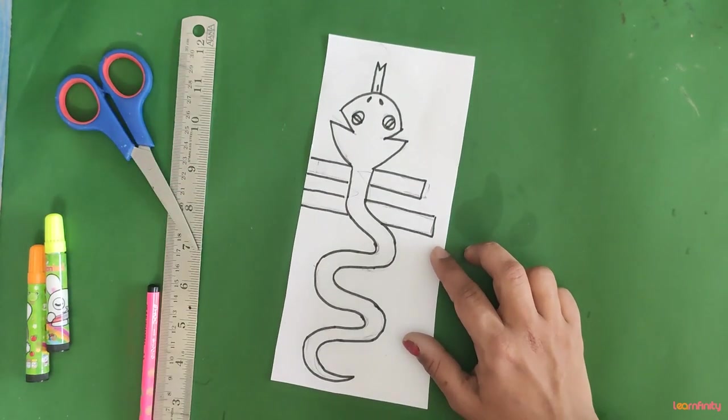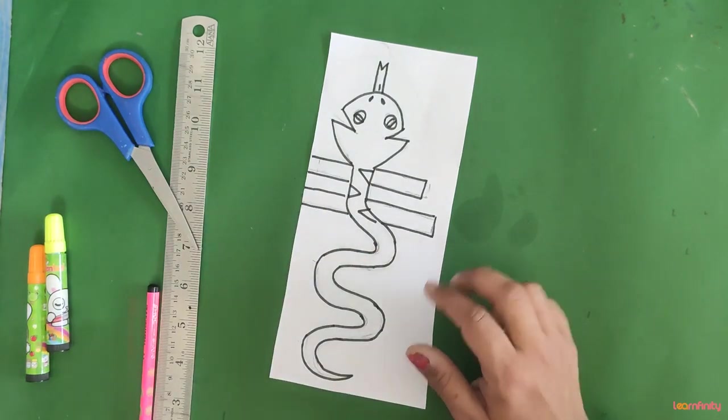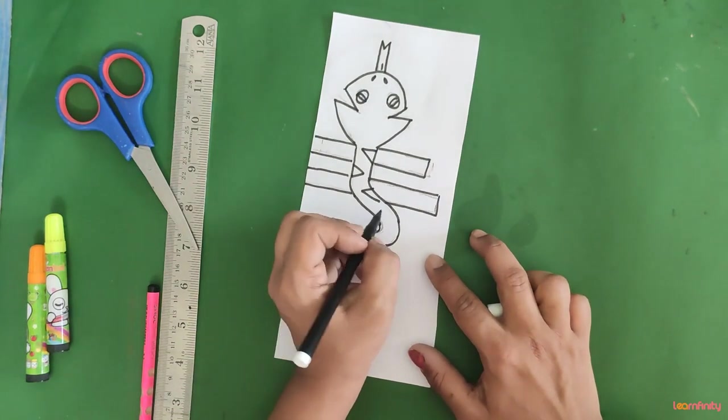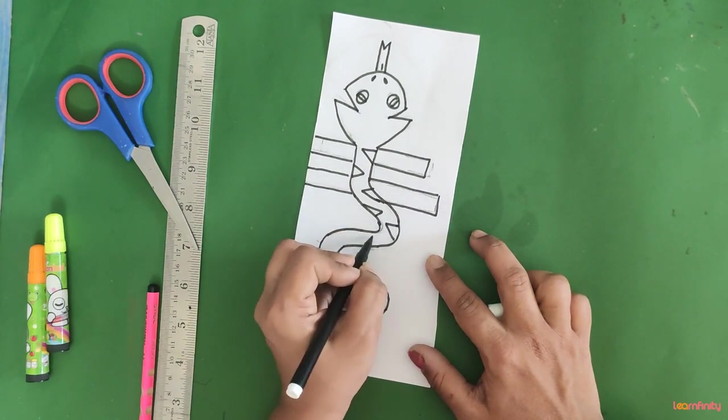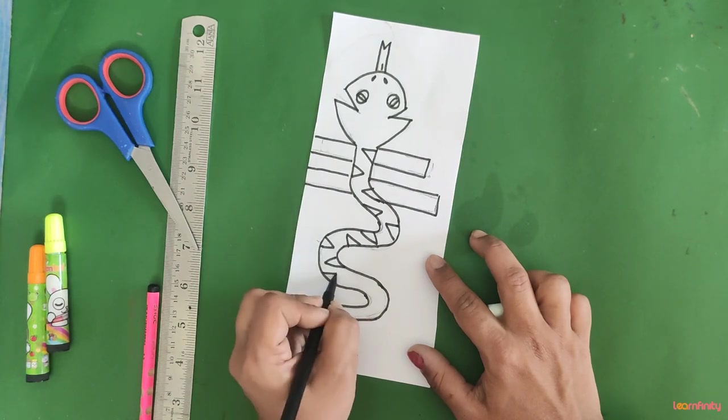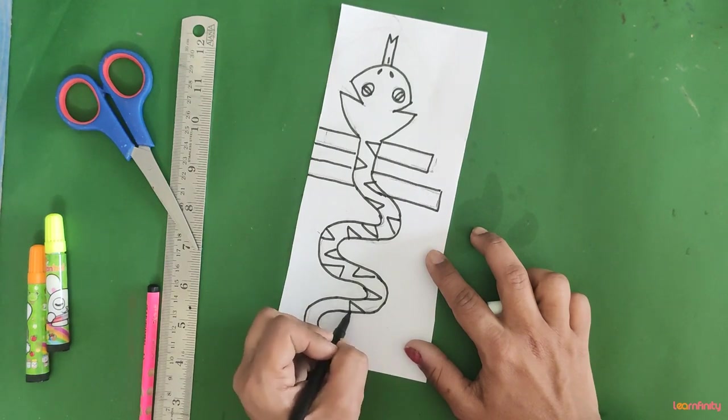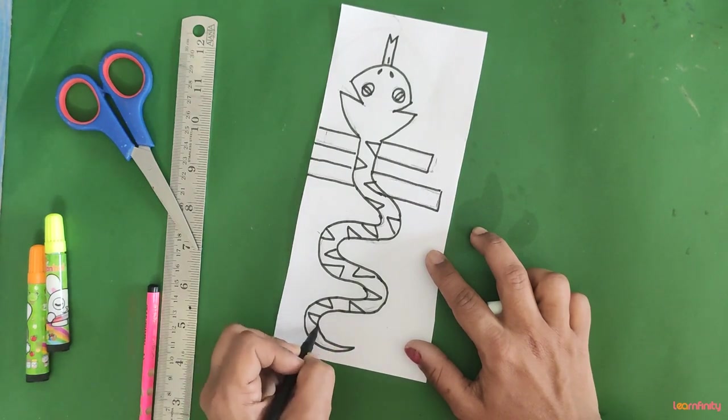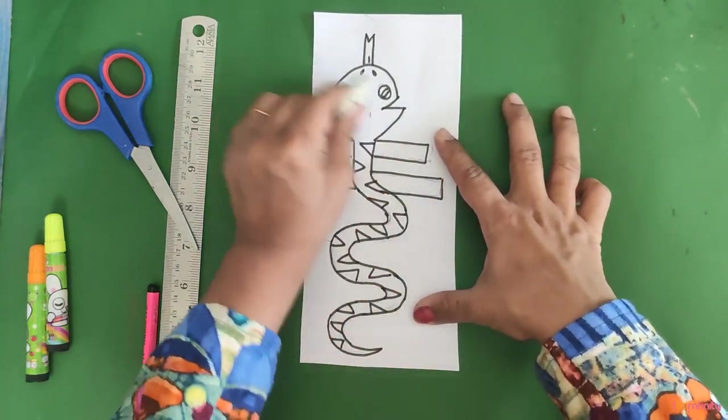Twice, okay. Now here you can draw any design whatever you wish to. Like this. Now rub the pencil lines. This way you have to draw the structure, then you have to rub the pencil lines.